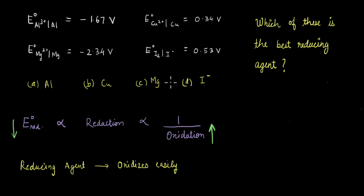The best reducing agent out of these options would be the one with the lowest value of standard reduction potential. If you look at these values, the lowest value is for magnesium, so the best reducing agent is magnesium.